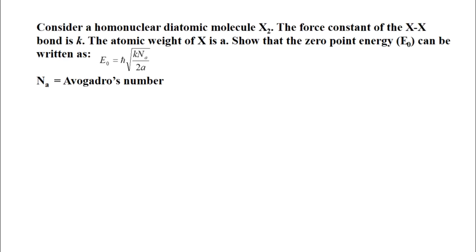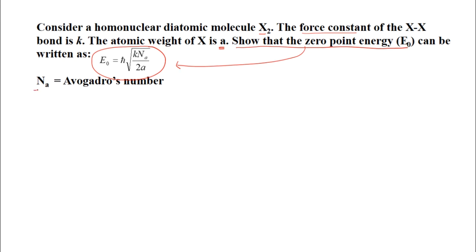The first question: consider a homonuclear diatomic molecule X₂. The force constant of the X−X bond is K and the atomic weight of X is A. We have to show that the zero point energy E₀ can be written in a specific expression involving Avogadro's number N_A.